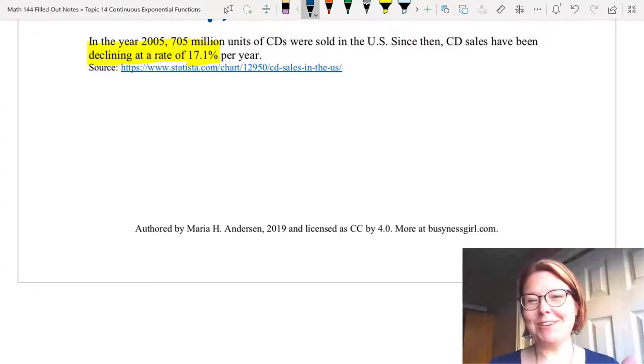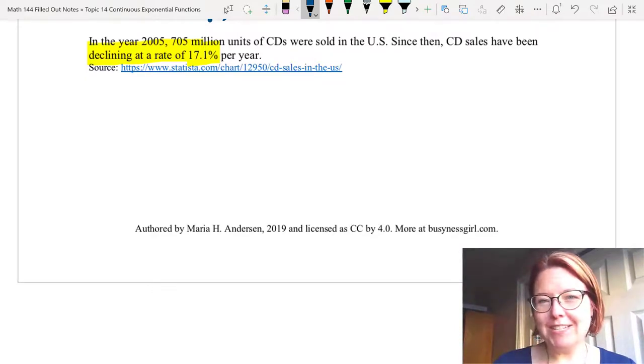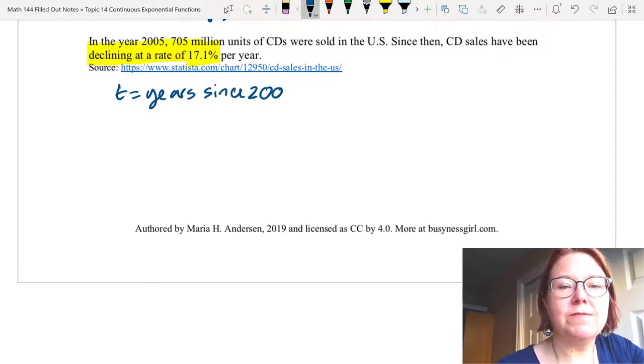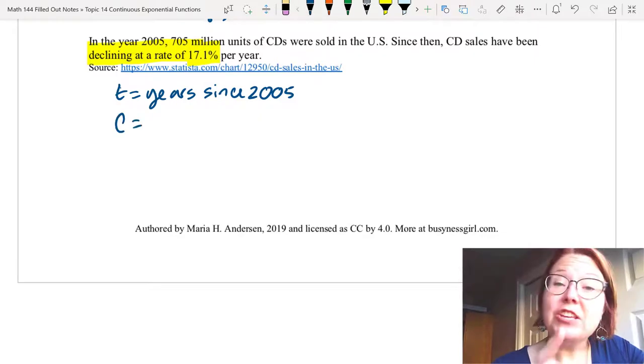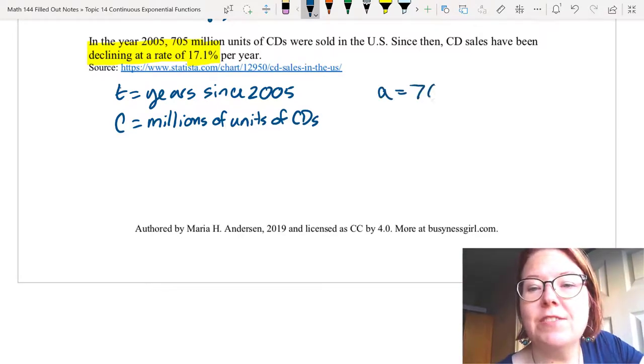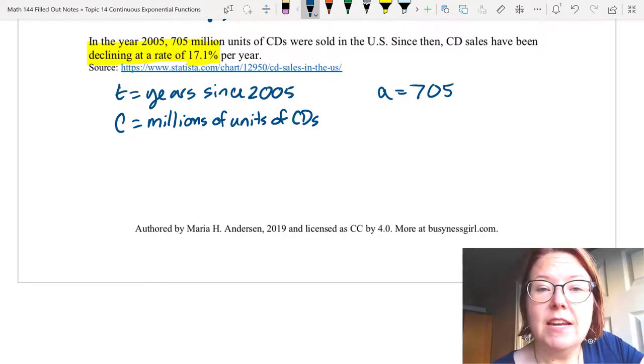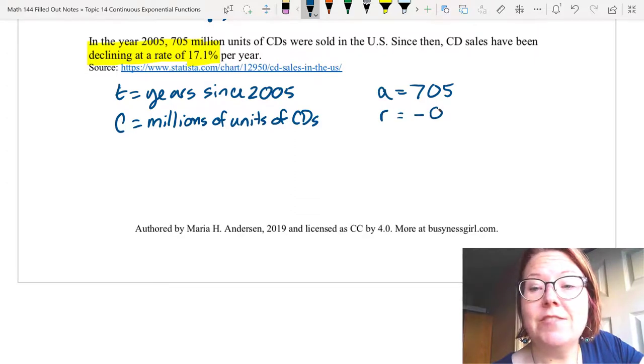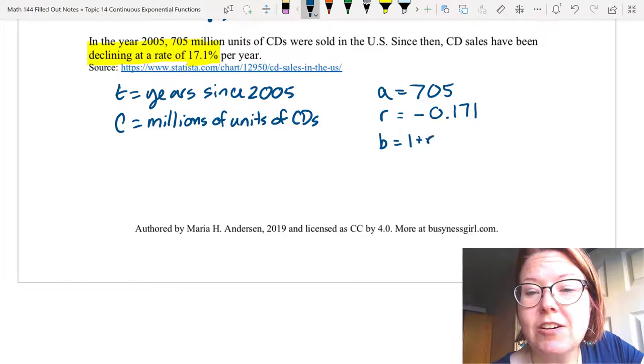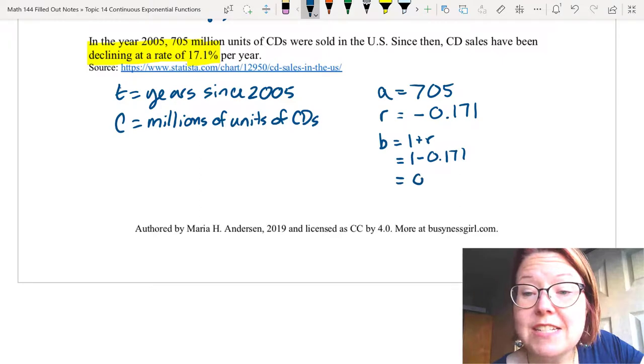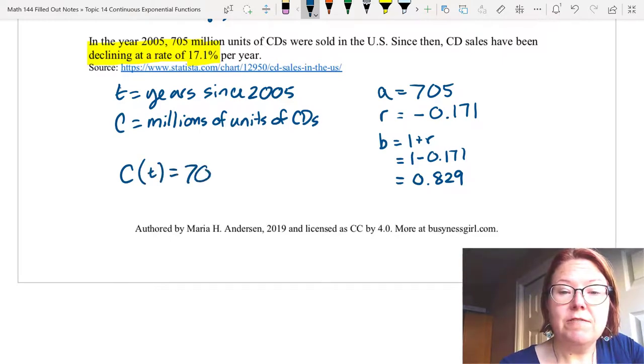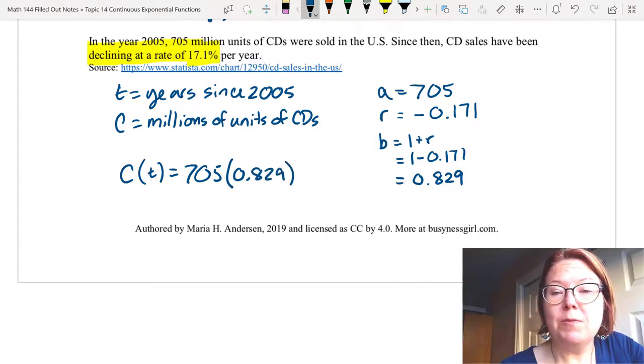Let's declare some variables. Let's let t be the years since 2005 so we can set up the initial value to be 705. I'm going to use capital C for the millions of units of CDs. I know the initial value in year 2005 is 705 million. And then I also know the r value is negative 0.171. Remember it's negative and remember to convert it to a decimal. The b value is going to be 1 plus r, and in this case, that's 1 minus 0.171, which is 0.829. So the model is C(t) equals 705 times (0.829)^t.